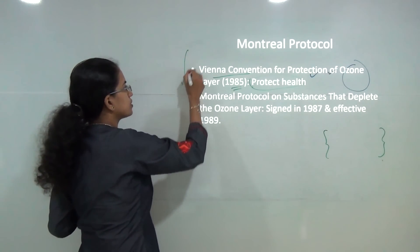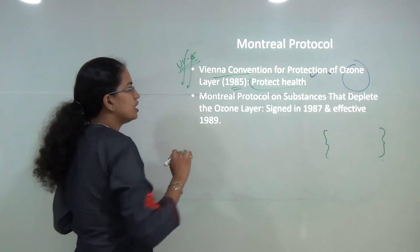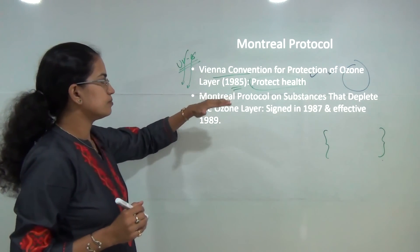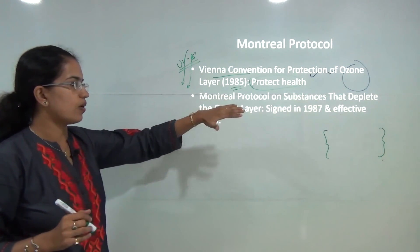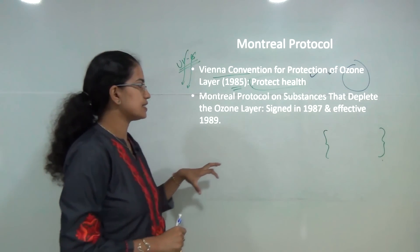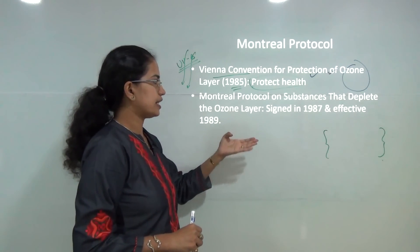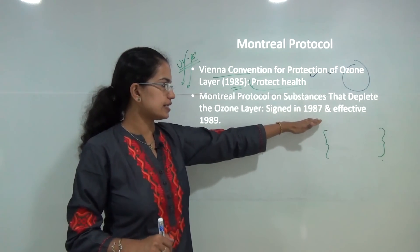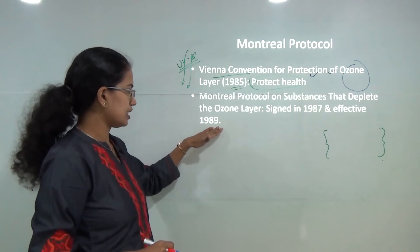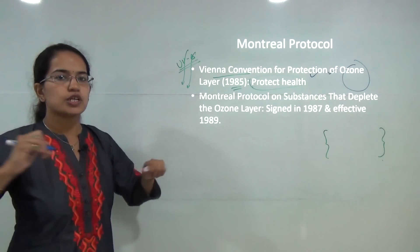Considering the Vienna Convention, the Montreal Protocol came into force, focused on substances that deplete the ozone layer. It was signed in 1987 and came into force from 1989, mainly proposed to curb or ban the production of CFCs.